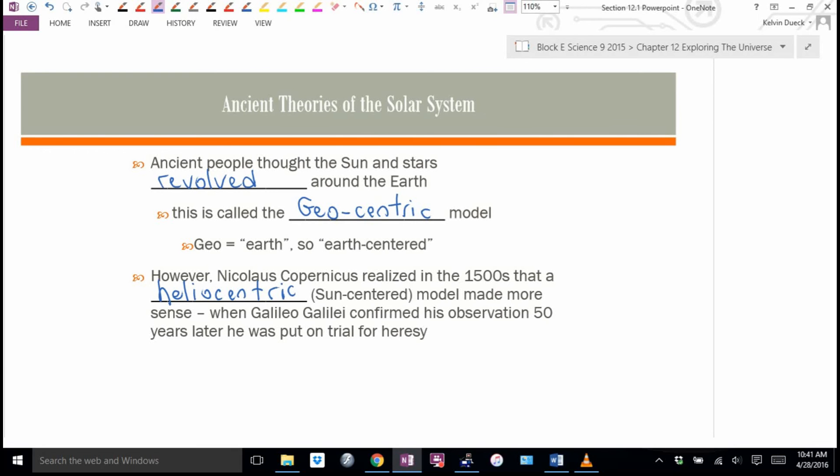Galileo confirmed this via his telescopes. If you look at Jupiter through a good pair of binoculars, you will see four little dots around Jupiter. And holy smokes, those are the moons of Jupiter. You know what? If moons go around Jupiter, maybe everything doesn't go around the Earth because there's stuff going around Jupiter.